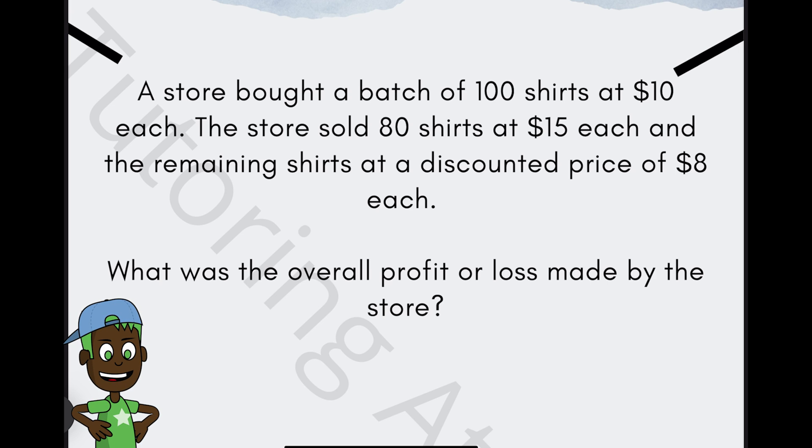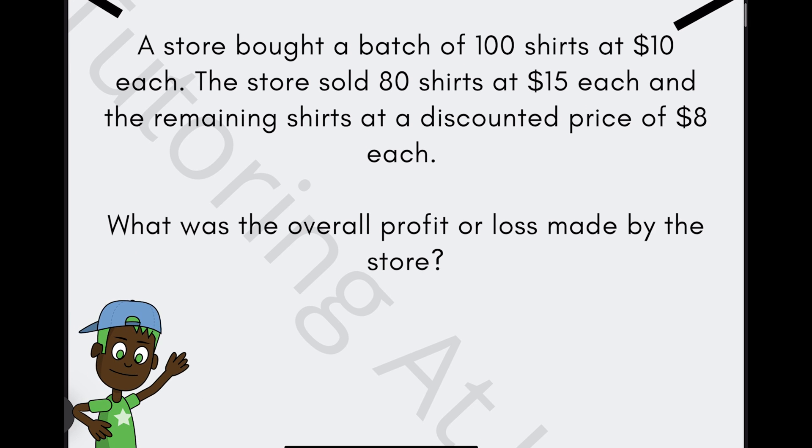In this particular question, we see that a store bought a batch of 100 shirts at $10 each. So let's assume the cost price of each shirt is $10. It then states that the store sold 80 shirts at $15 each. If we calculate the revenue from selling 80 shirts, that's 80 multiplied by 15, and that gives us $1,200.